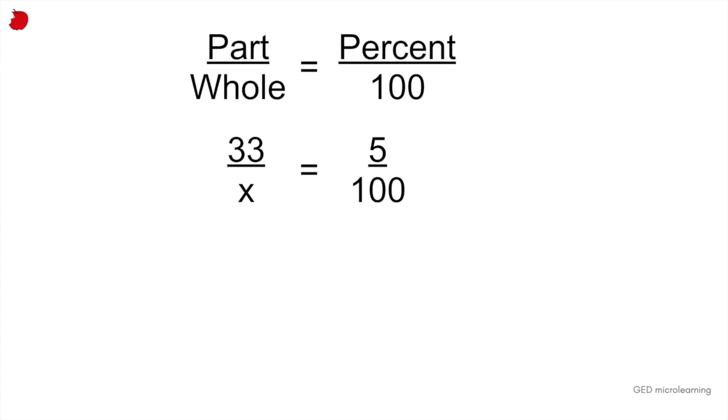So on the left side, we have the part divided by the whole, which will be 33 divided by x, is going to equal 5 divided by 100. And now all you have to do is find out that x. So the way you do this is you're going to multiply that x by 5, so that would give you 5x. And then you're going to multiply that 100 by 33. That's going to give you 3,300.